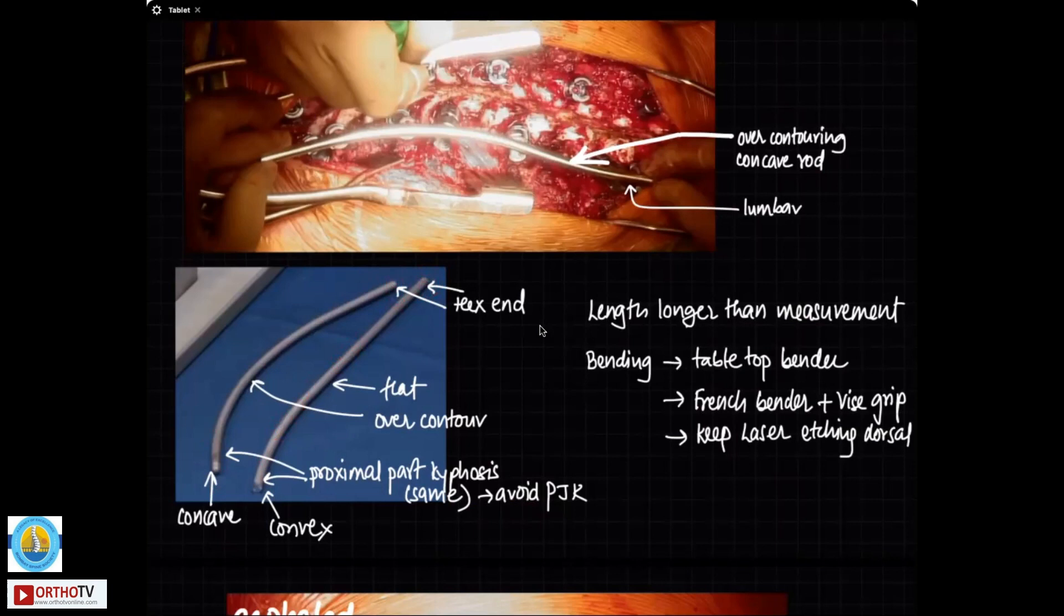There is a hex end on which the wrench goes which keeps the rod in a perfect alignment as you bring the spine towards the rod. Remember that when you are measuring this rod, measure the length longer than your measurement because as you correct, the spine is going to lengthen and your rod will fall short if you go right from this end to this end. So keep a little bit longer, about 2 cm longer than what exactly you measure because as you correct the scoliosis, it has to accommodate that lengthening.